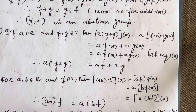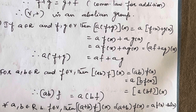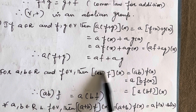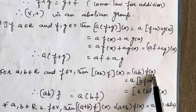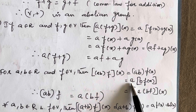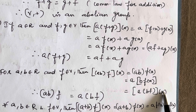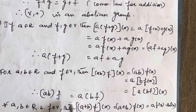For any two scalars a, b from R multiplied with the function: (ab)·f(x) = a·b·f(x) = a·(b·f(x)). So (ab)·f = a·(bf). This confirms scalar multiplication compatibility is satisfied.